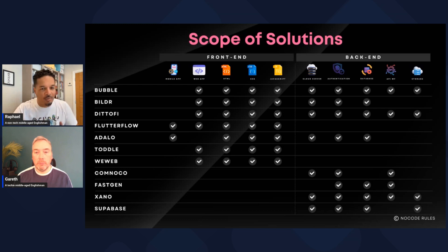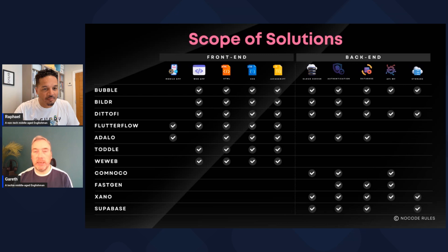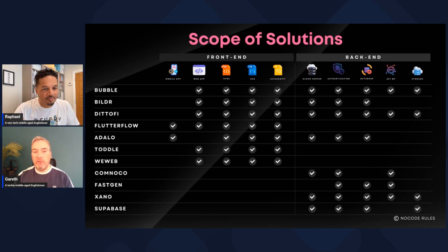If you need to do something more with Supabase — like clean up data before it goes into the database — you have to have something else as well. Two examples on the list are Communico and Fastgen. Communico is a no-code programming platform for Supabase, and we're actually interviewing the founder Stuart Malt in our next episode. That seems to be where Communico really fits into the current no-code stack.